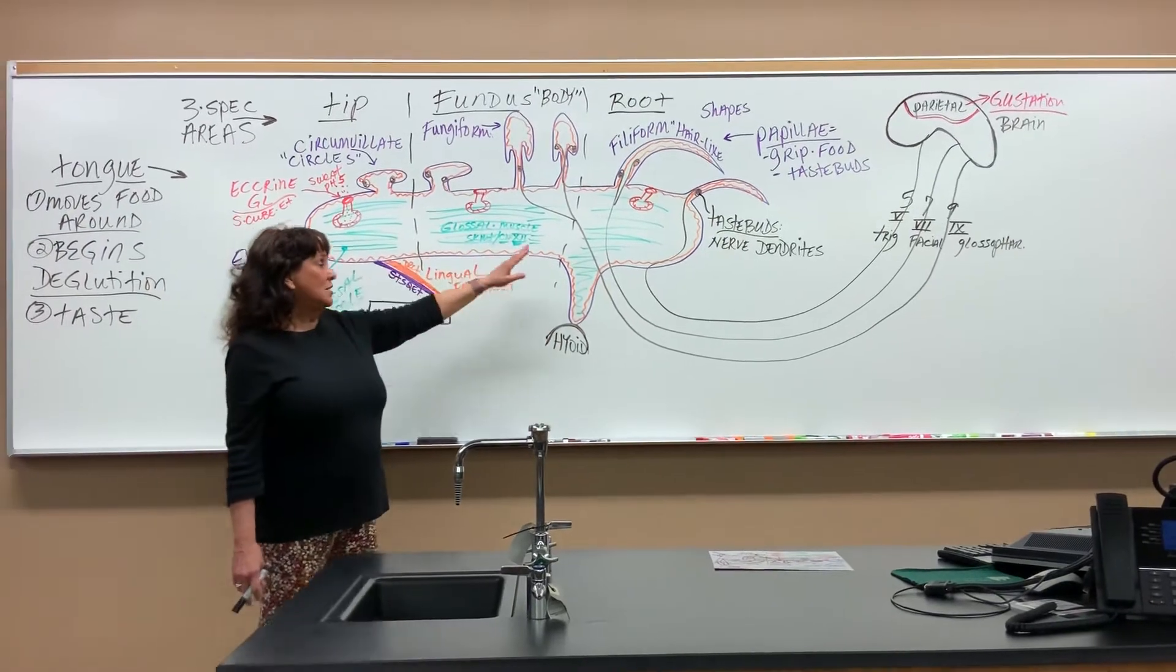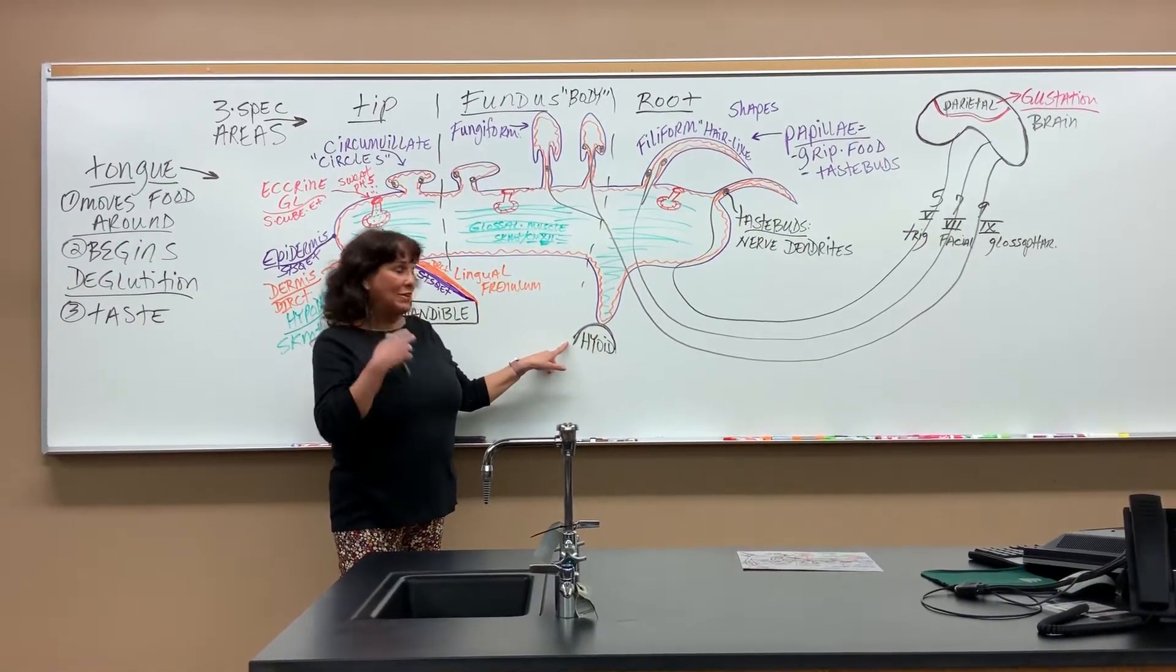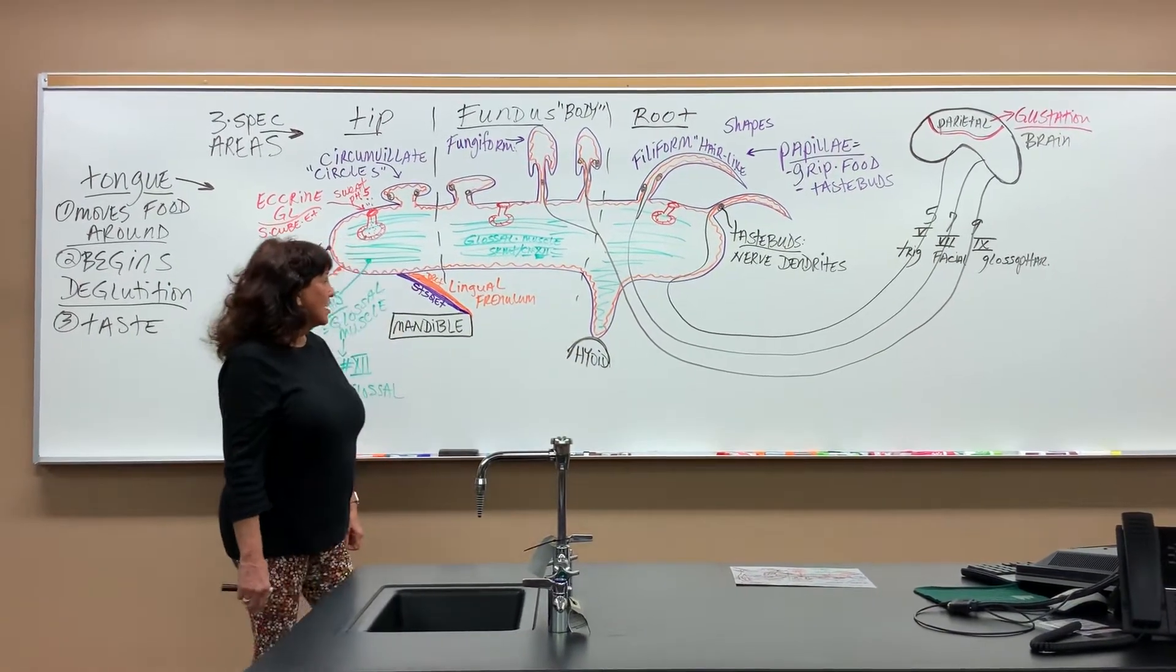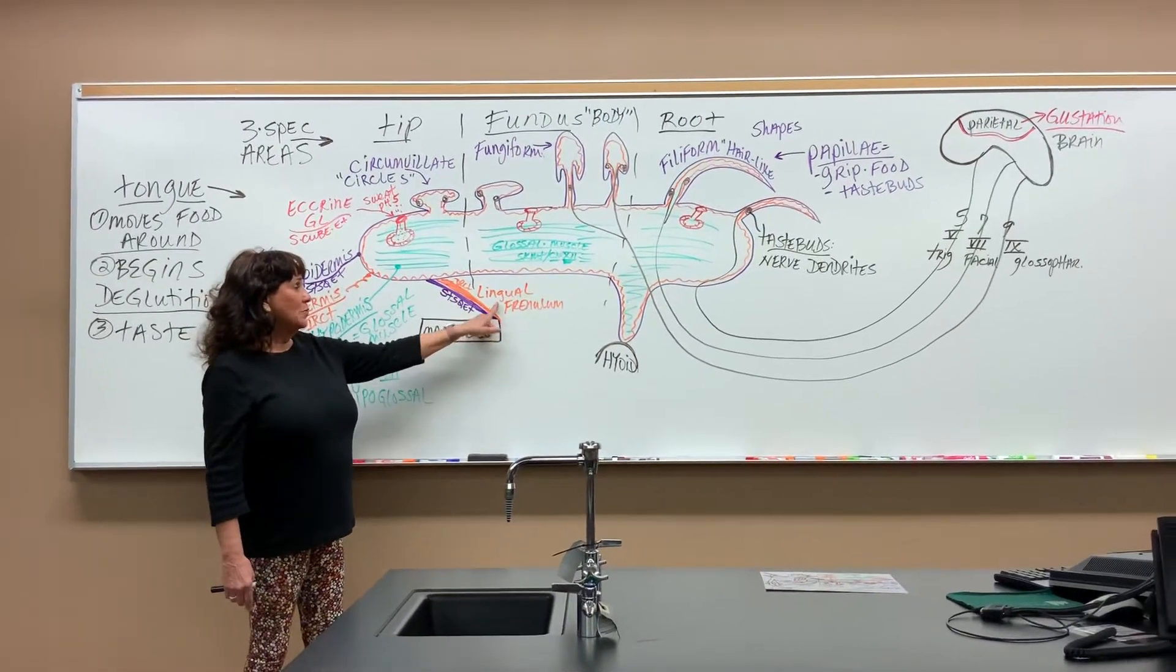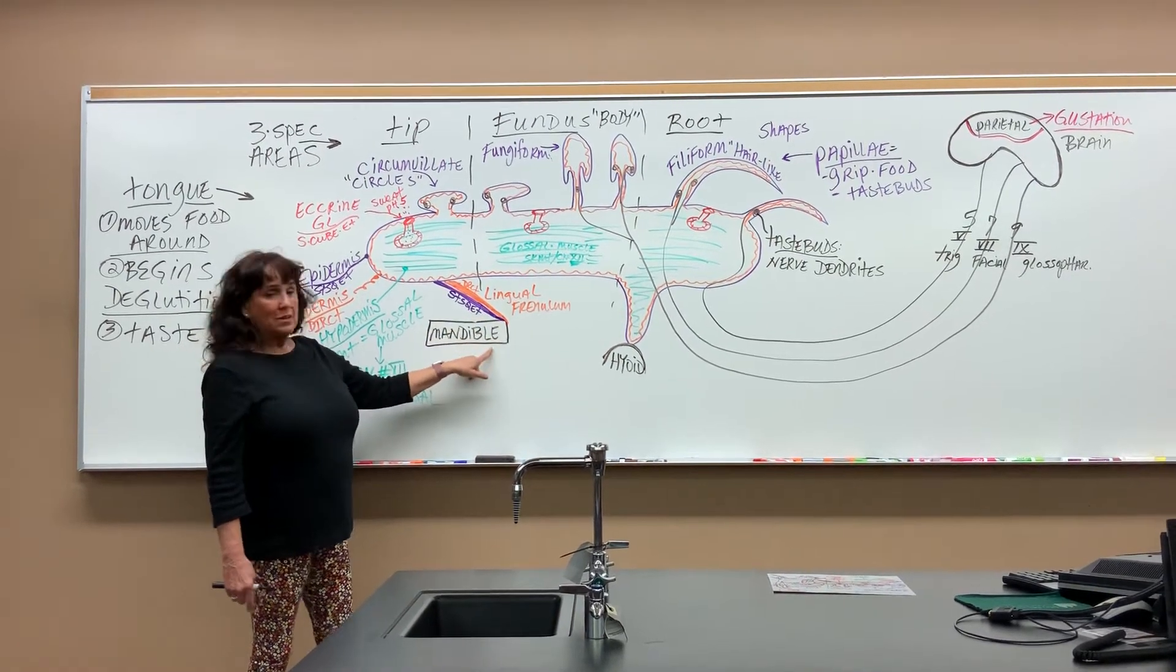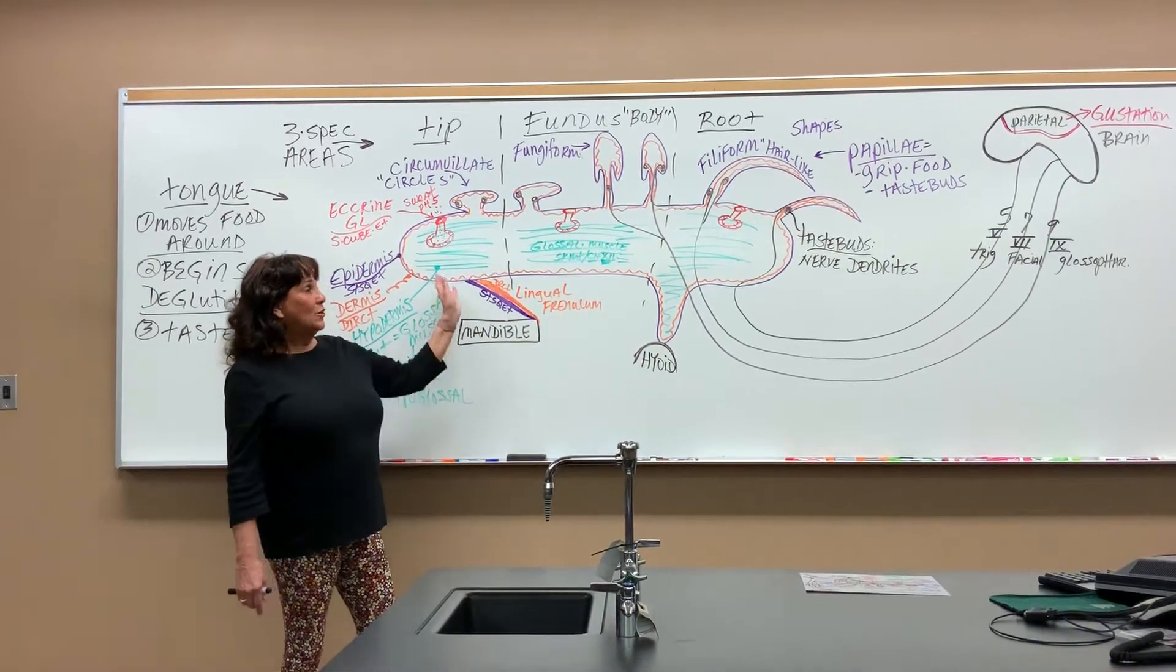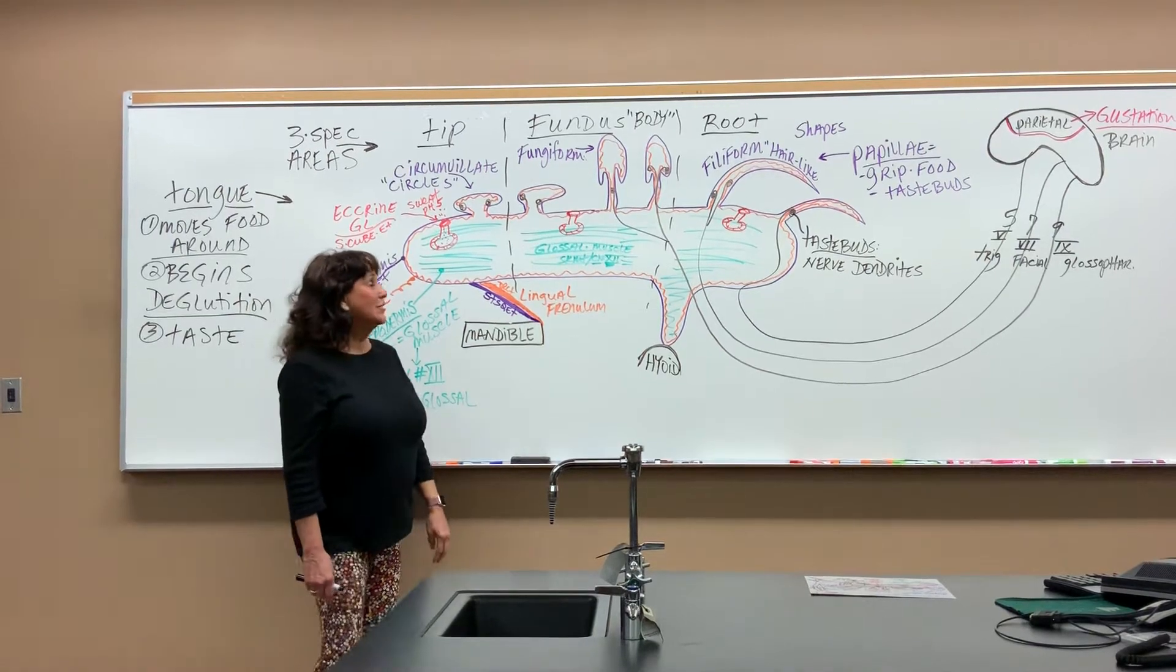What does the tongue attach to? It attaches to the hyoid bone, which is underneath your mandible. Also, the tongue is held upright in the oral cavity by the lingual frenulum, which is dense regular and stratified squamous epithelium that attaches to the mandible bone. This prevents your tongue from flipping over or back into your throat area, the oral pharynx.